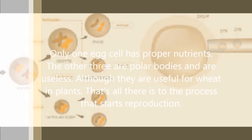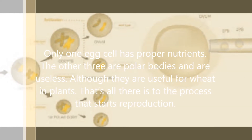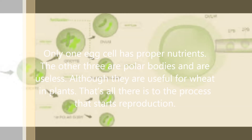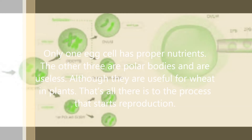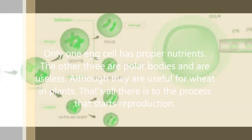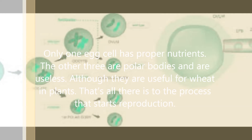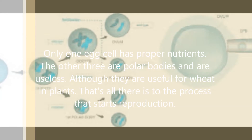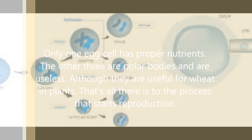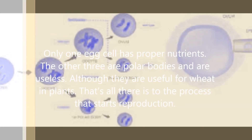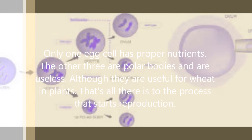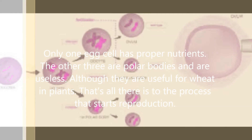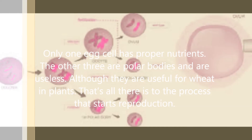Only one egg cell has proper nutrients. The other three are polar bodies and are useless, although they are useful for weeds and plants. That's all there is to the process that starts reproduction.